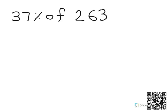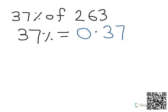In this question we've got to find 37% of 263. We need to find the multiplier. So we need to do 37 divided by 100 to get the multiplier. So it's 0.37.